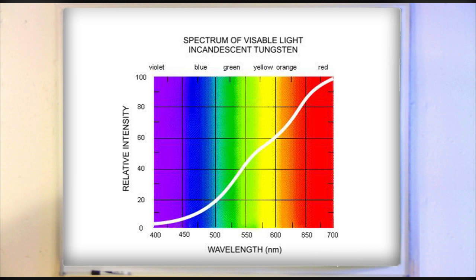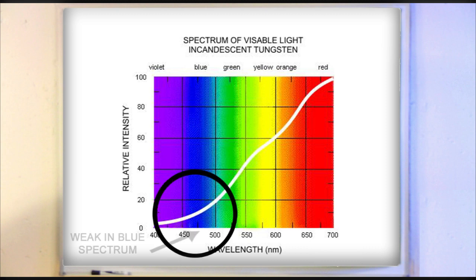This graph shows the visible light generated by a 3200 K tungsten light. Notice how little blue light is produced.